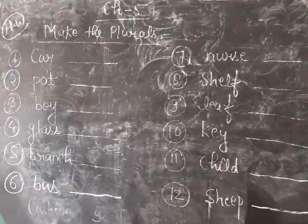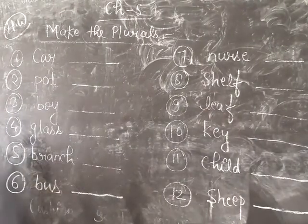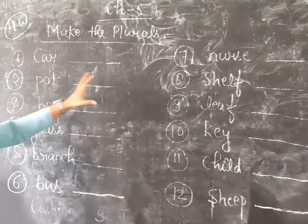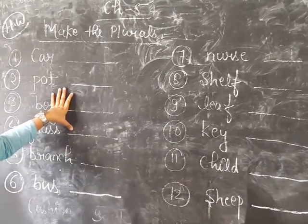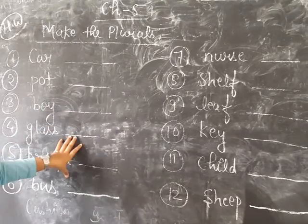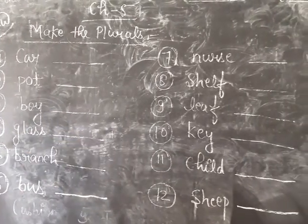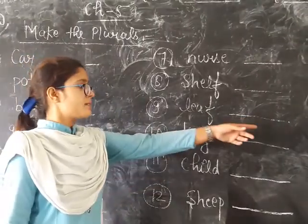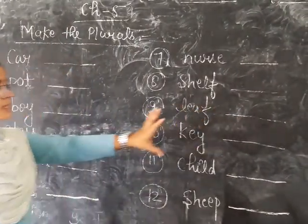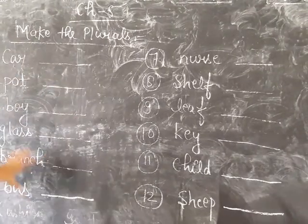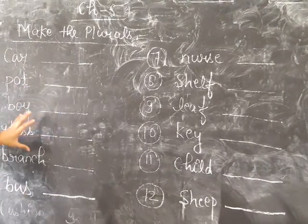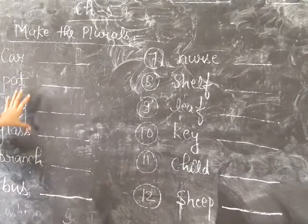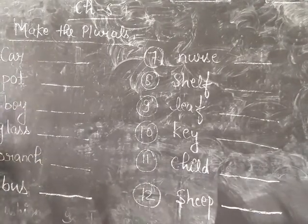And now here, for your homework, make these plurals. These rules I have given you have all the combinations. There will be S, E.S., V.E.S., and I.E.S. So this is all your combined form. Just follow what I have told you.